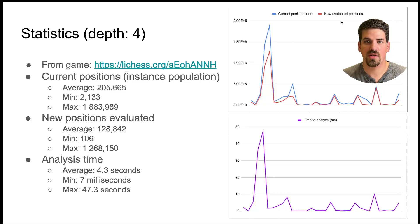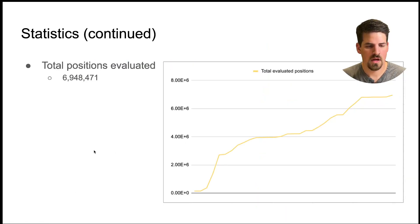And the analysis time statistics kind of follow the number of positions. So the average time for a move in analysis was 4.3 seconds. At the minimum, we did in seven milliseconds, and the maximum was close to 50 seconds near the beginning. The total positions evaluated over the course of the game increased quickly at the beginning, and then leveled off a little bit, and increased at the end as well. And got up to about seven million moves evaluated through the course of this game.